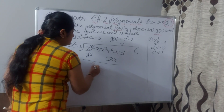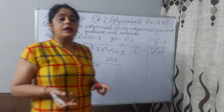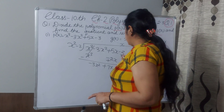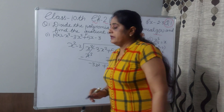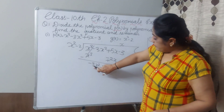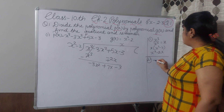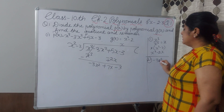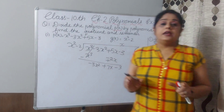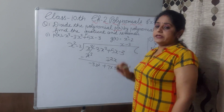First write minus 3x here. 5x is positive and 2x is also positive, so when you add it will come 7x. Write 7x here and carry minus 3 from here. Now second step: minus 3x² divided by x². x² and x² will be cancelled, and you will be left with minus 3.